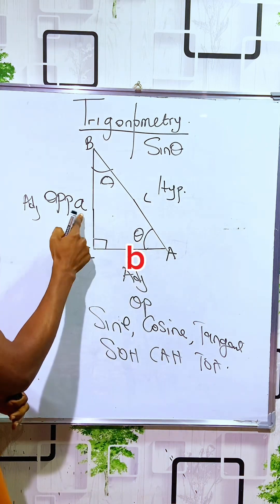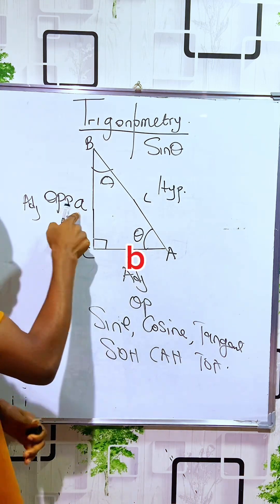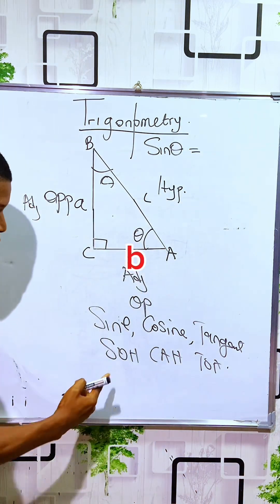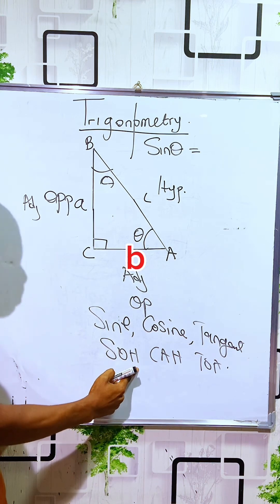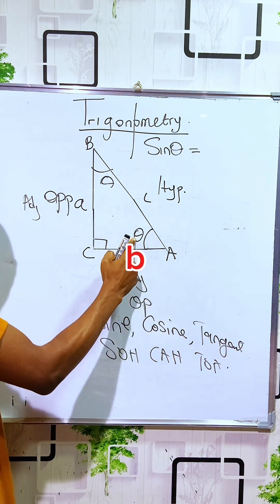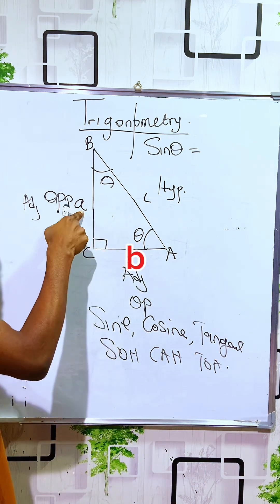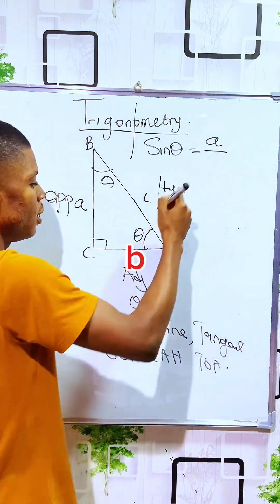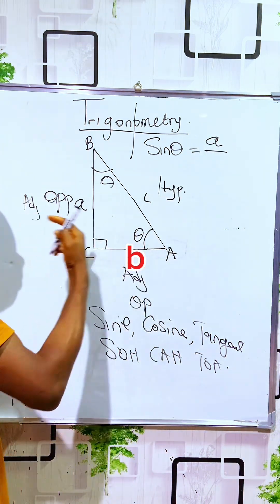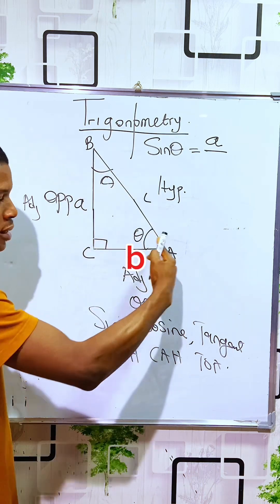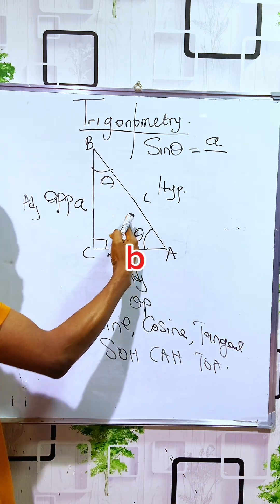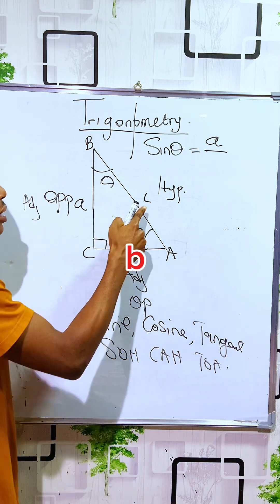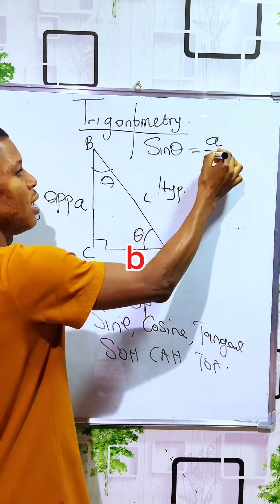Sine theta, if you consider this angle theta, is the ratio of the opposite side over the hypotenuse. The opposite side here is side A, and the hypotenuse is always the longest side, facing the right angle, which is side C.